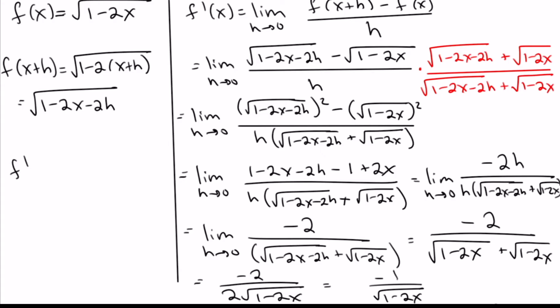We have now finished our problem. f prime of x is negative 1 over the square root of (1 minus 2x).